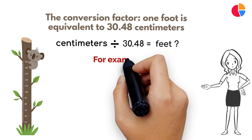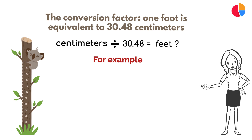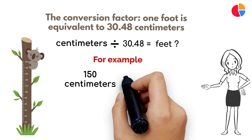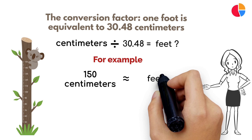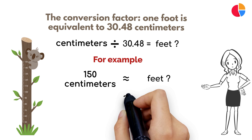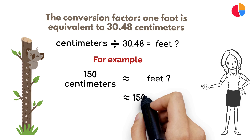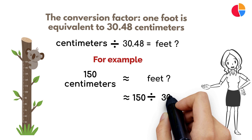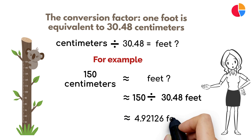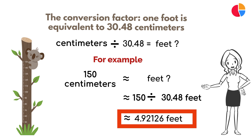Now, let's dive into an example. Suppose we want to convert a length of 150 centimeters to feet. We begin by dividing 150 by the conversion factor of 30.48. The result is approximately 4.92126 feet.